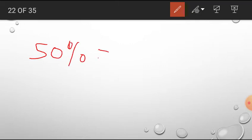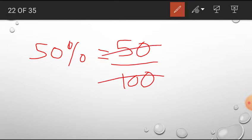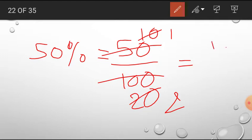So 50 percent means 50 per 100. Now solve this and in 5 tables, 50 is 10 times and 100 is 20 times. And in 10 tables, 10 is 1 time and 20 is 2 times. That is 1 by 2. So we have converted 50 percent into 1 by 2, that is fraction.